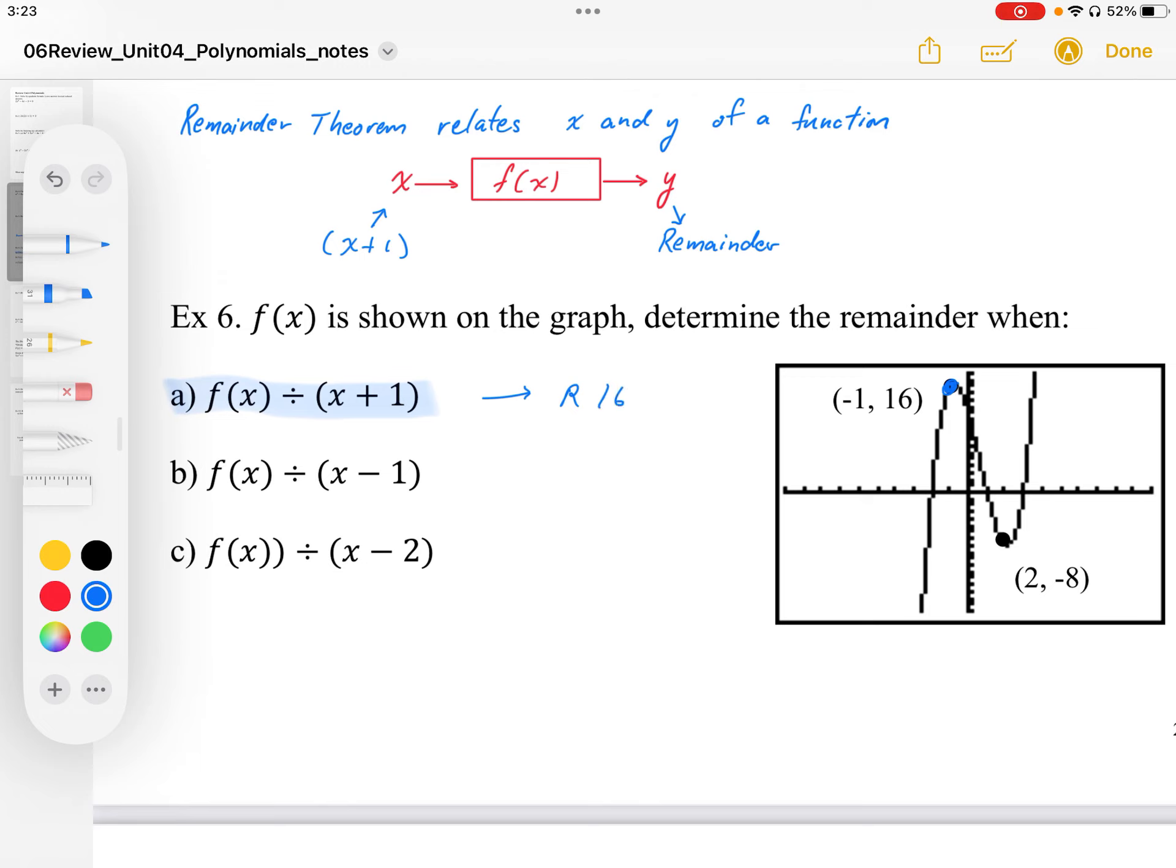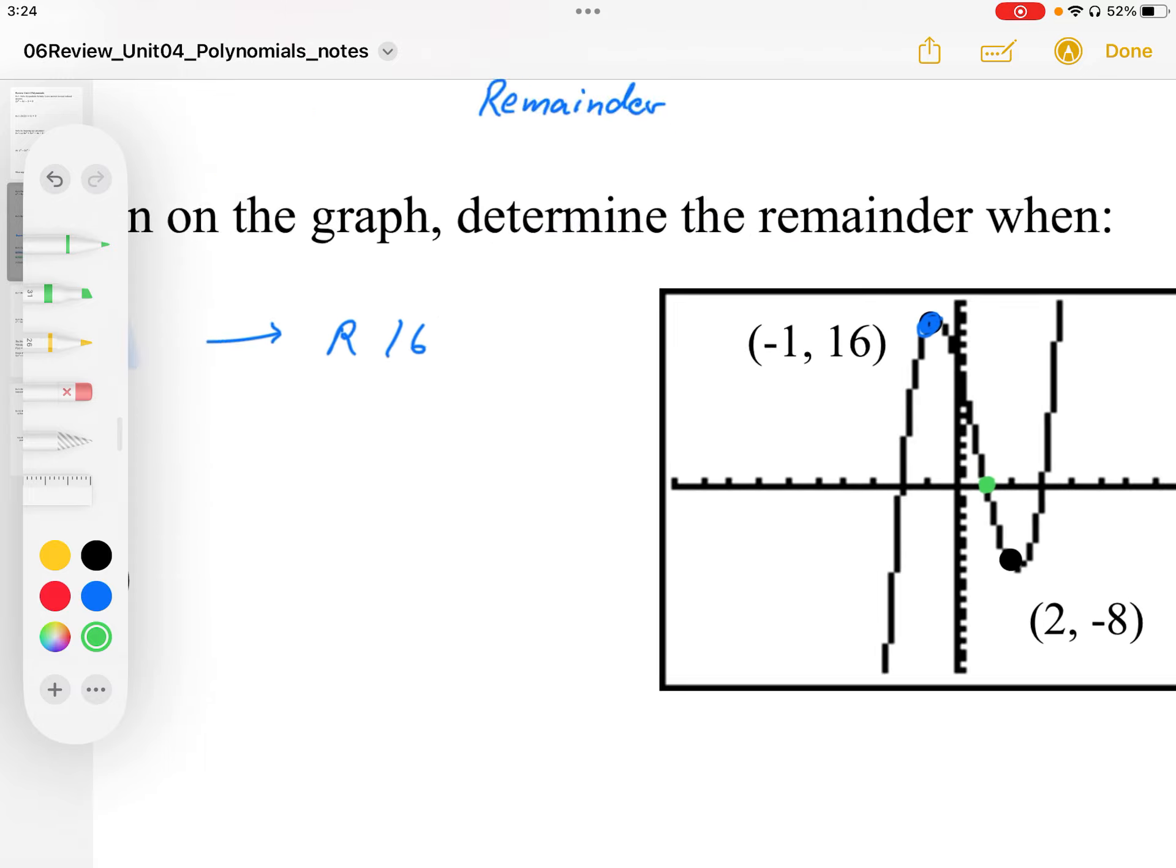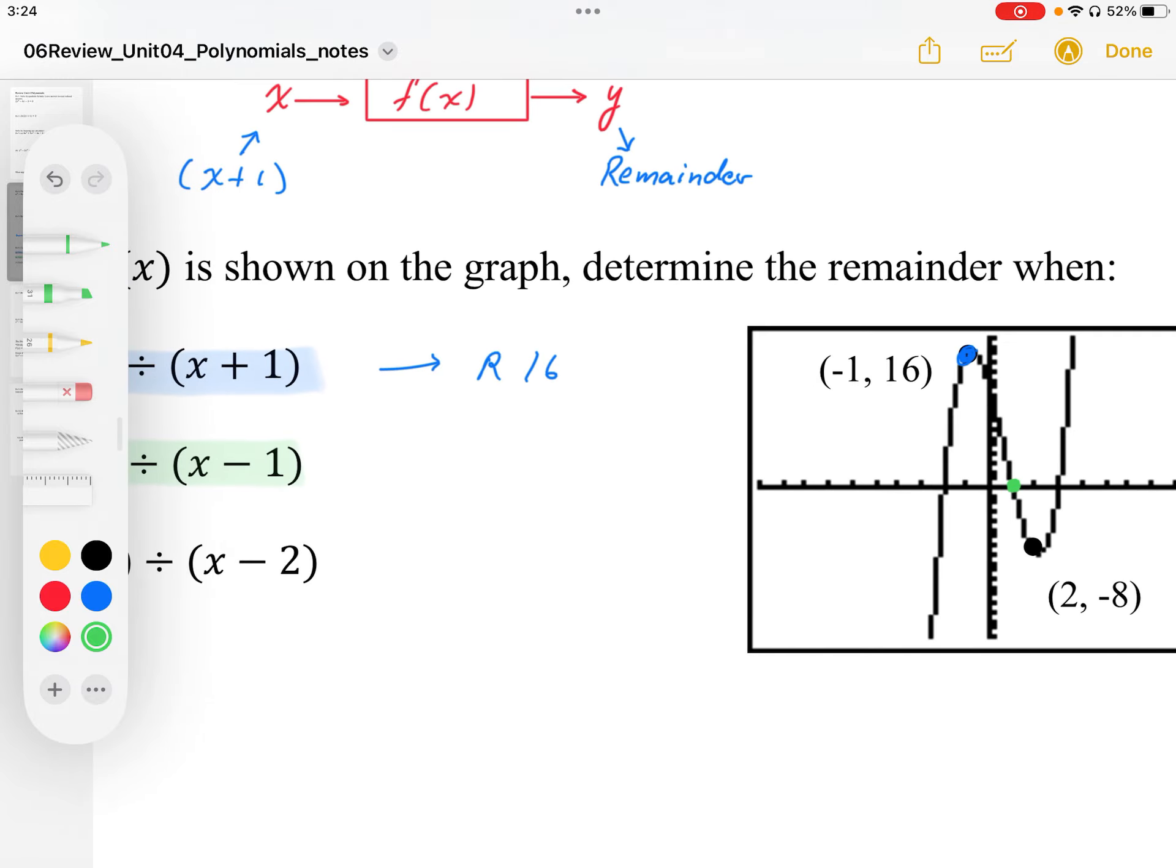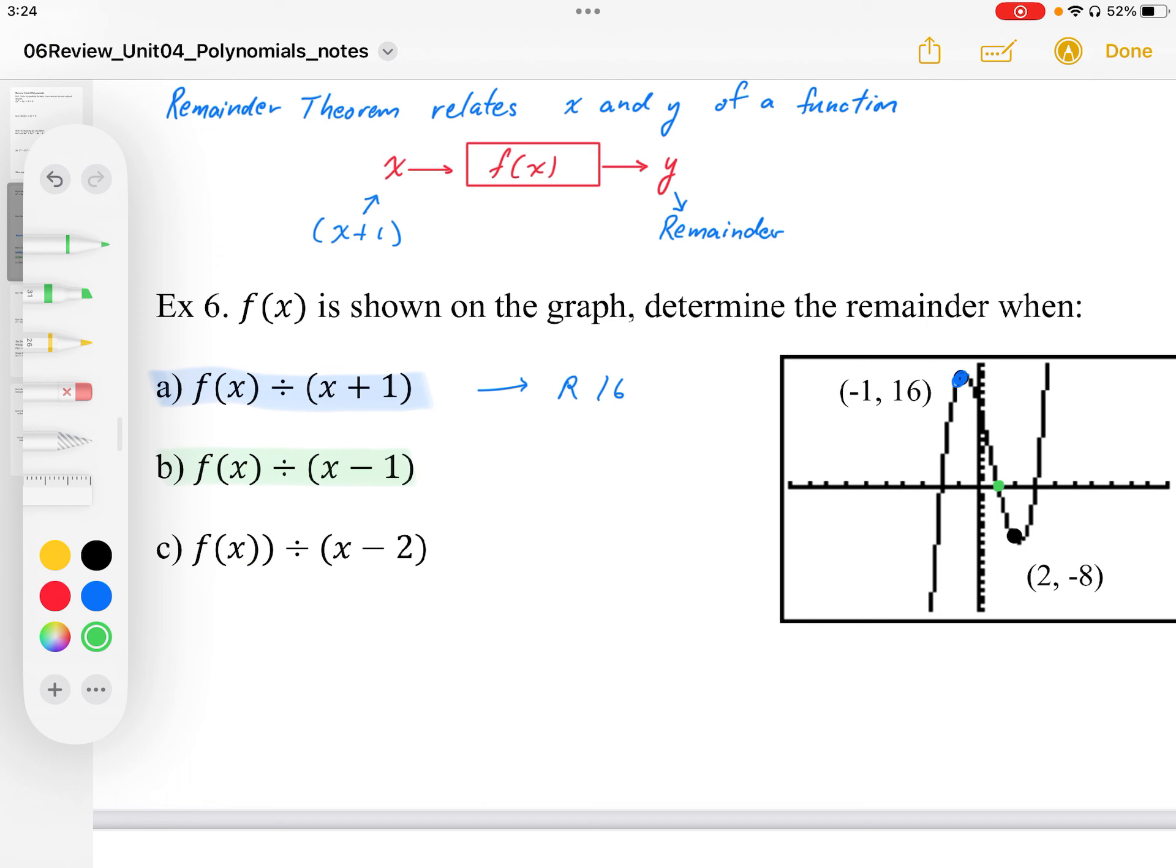For x minus 1, we plug in the root value, and we can see that those are going to be the ones that cross at the x-axis. So at x equals 1, it crosses at the x-axis, which means then it's a factor, therefore the remainder is 0.